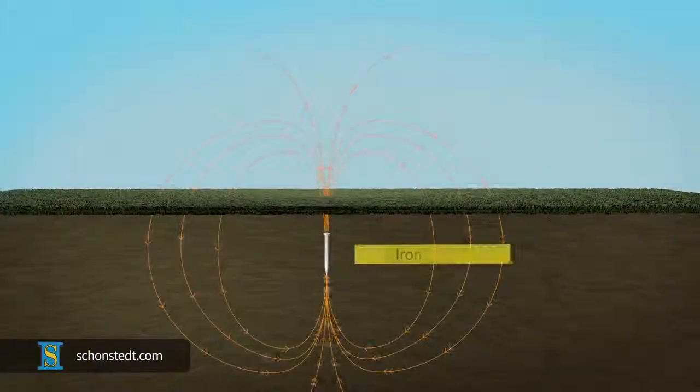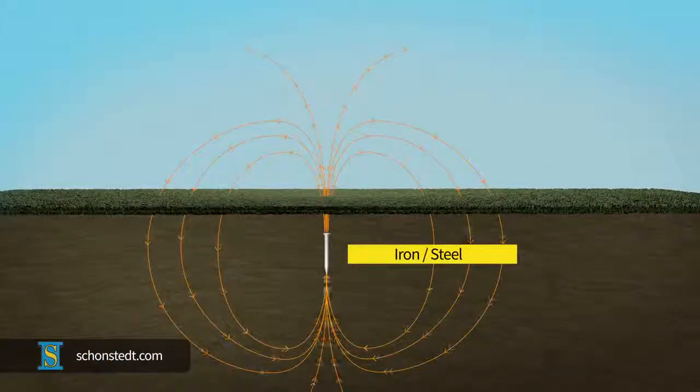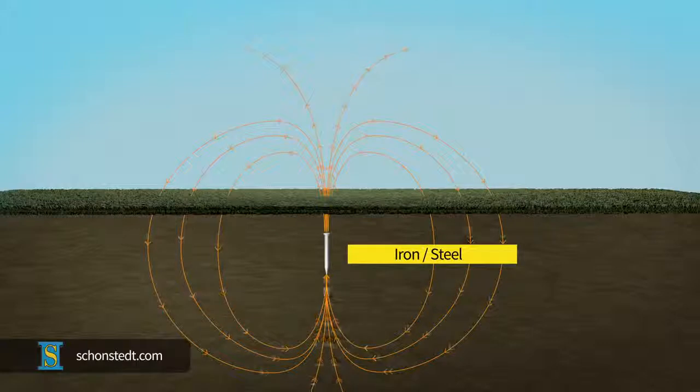Objects made of certain materials, such as iron and steel, are affected by this field in such a way that they develop their own magnetic field, very similar to that of a magnet.